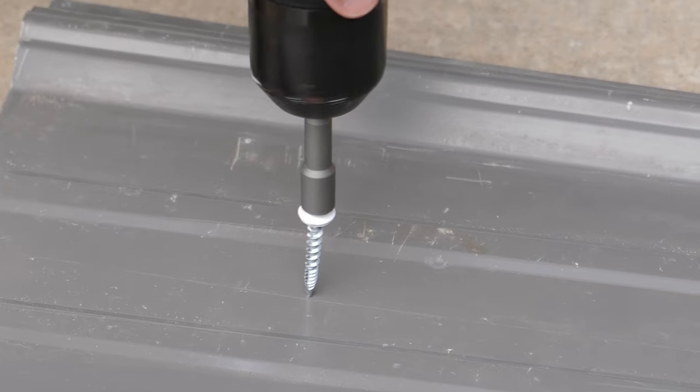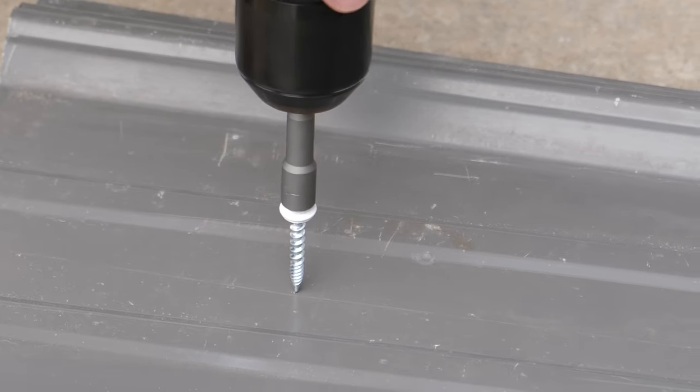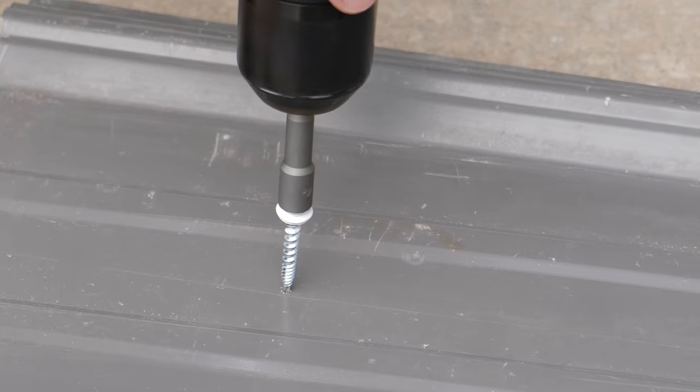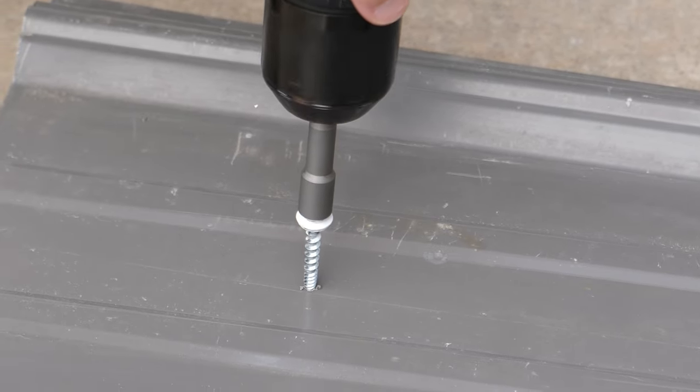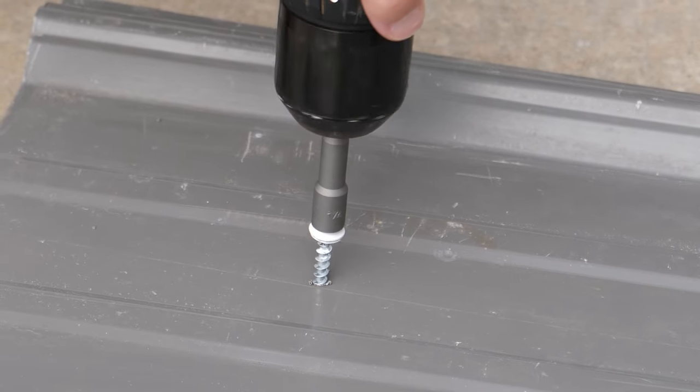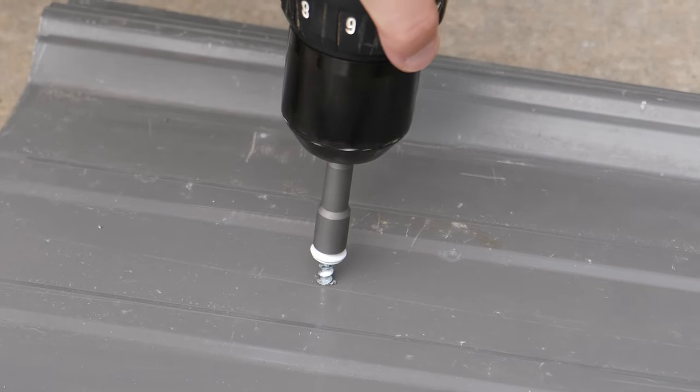Metal roofing screws typically have a self-drilling tip that acts as its own drill bit. Self-drilling screws eliminate pre-drilling a pilot hole into the substrate. The screw cuts its threads and creates a hole in the material all in one action.